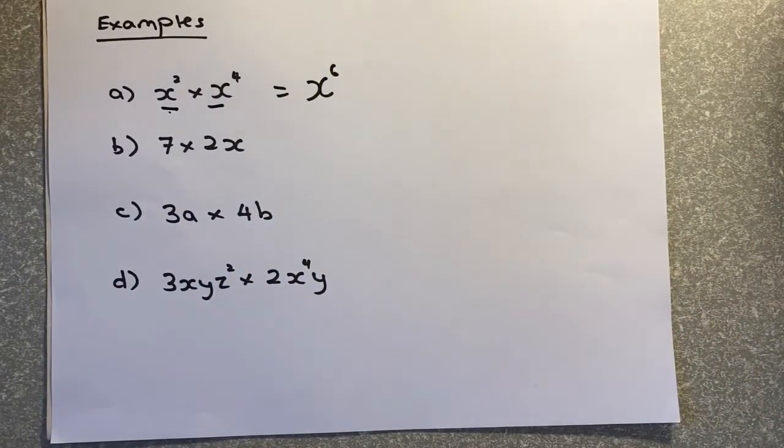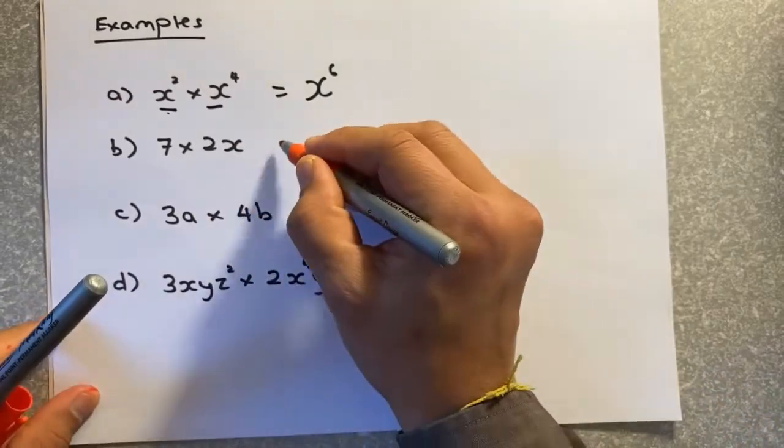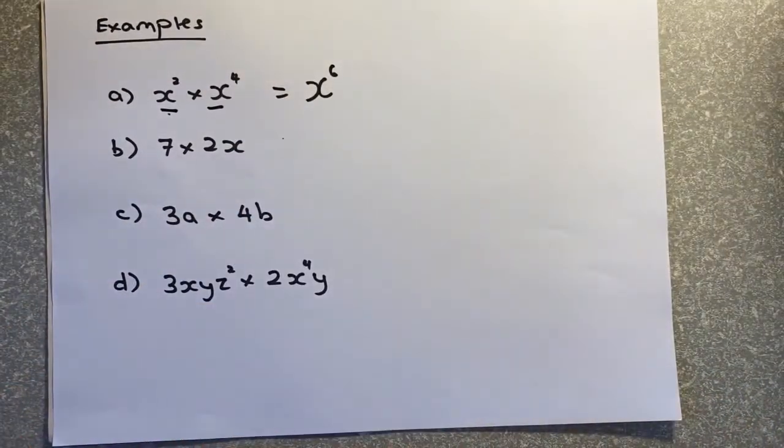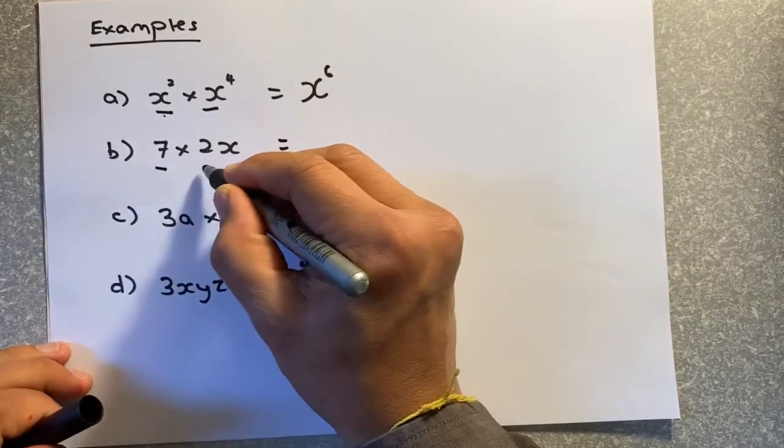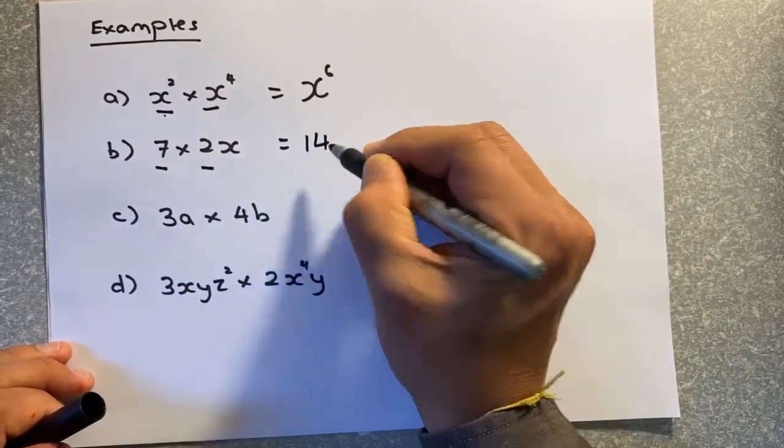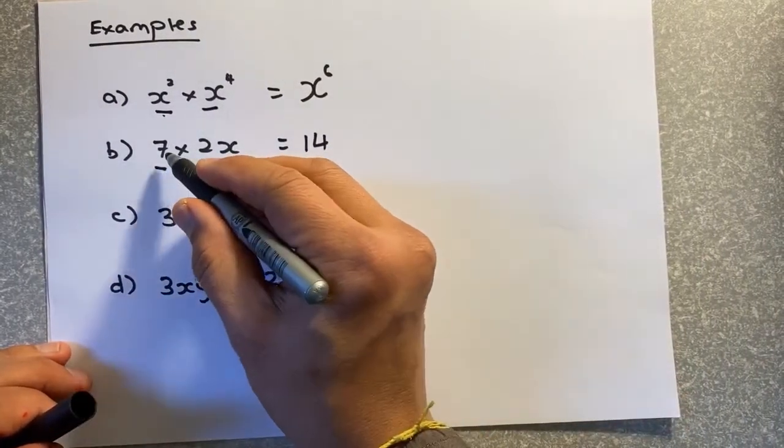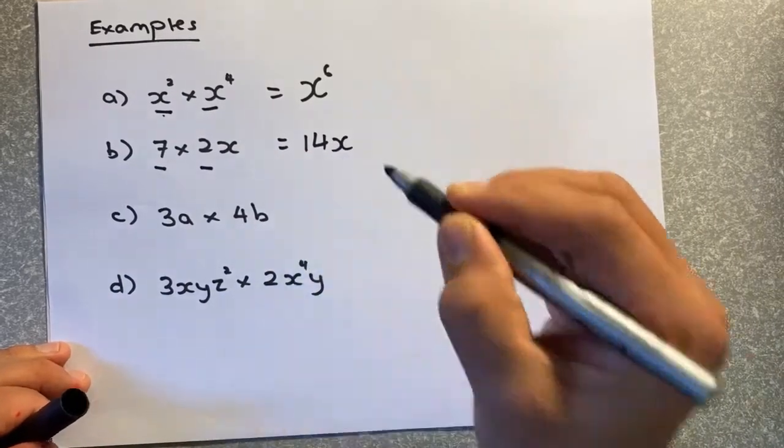Next one. This is slightly different. So remember, the rule is that you need to multiply the numbers together. So in this case, 7 multiplied by 2 will give you 14, and there's only one x, there's no x here, so the answer is 14x.